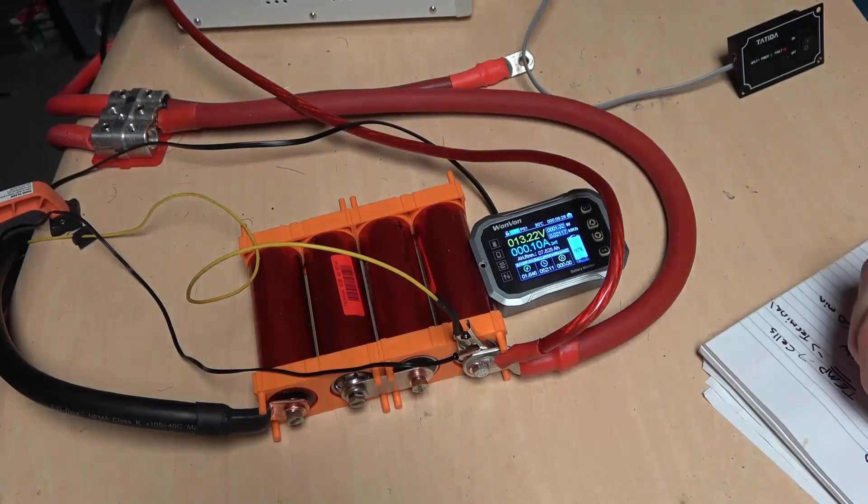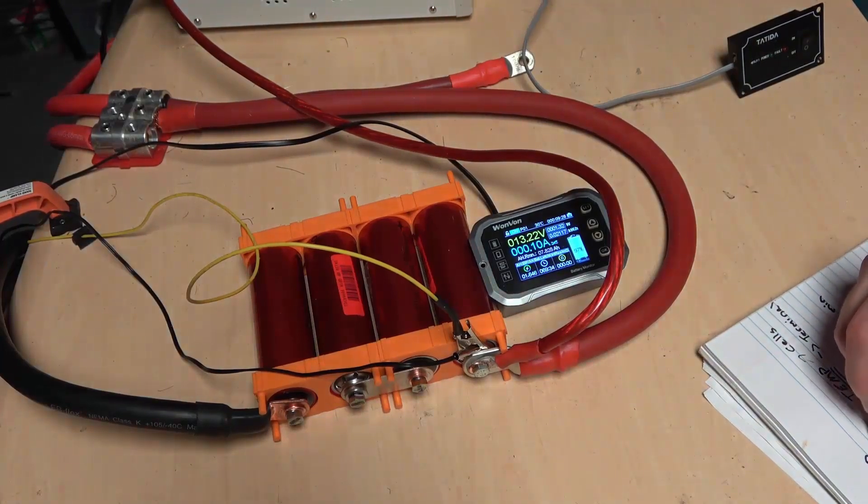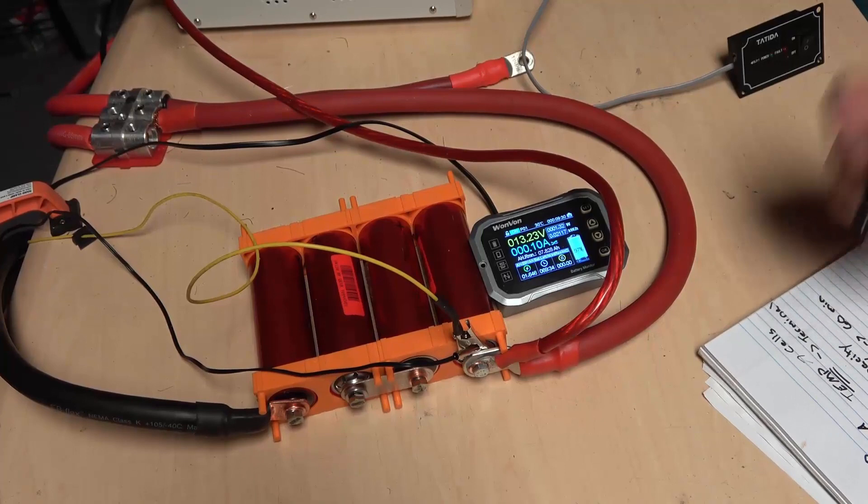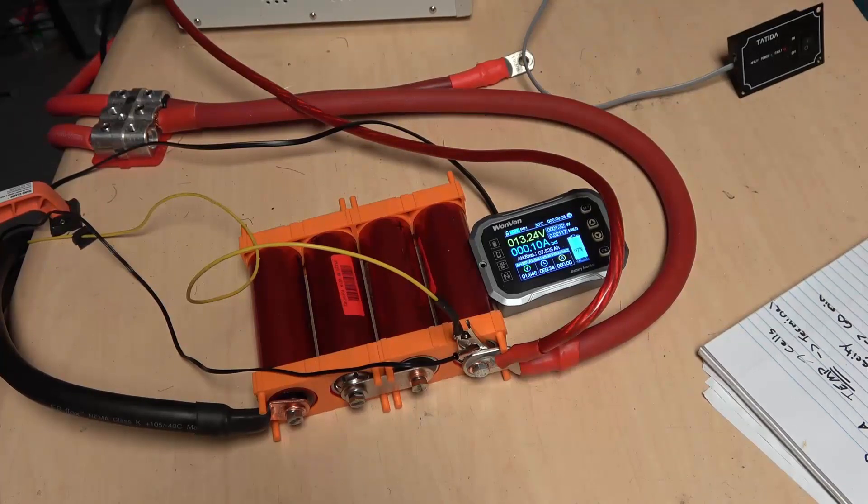We know it can do 60 amps, but anything over that, it seems to just tank very quickly. So next we will do the discharge curve and the capacity test. We'll do these together, it will be fairly easy to map out like that.